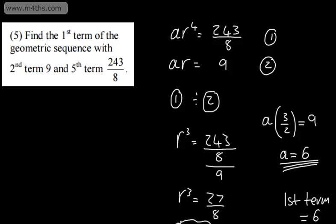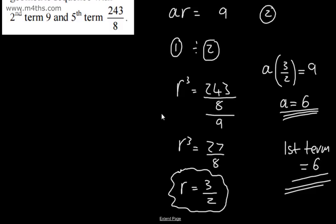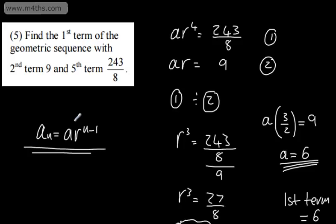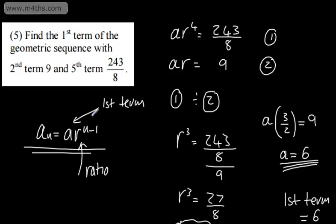That is a basic introduction to finding the nth term of a geometric sequence. In the next video, we'll work through some more questions like this and then some slightly more challenging ones. All you need to remember is that the nth term, a sub n, is equal to a multiplied by r to the power of n minus 1, where a is the first term, r is the common ratio, and n is the number in the sequence.